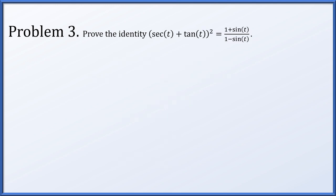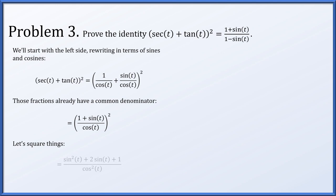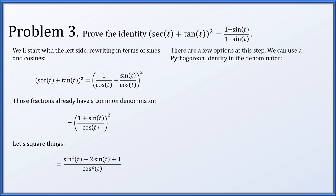In problem 3 we'll prove the identity that (secant t plus tangent t) all squared is always equal to (1 plus sin t) over (1 minus sin t). We'll start with the left and make it look like the right hand side. The left seems more complicated because it has secants, tangents, and squaring. We rewrite in terms of sines and cosines: (1 over cos t plus sin t over cos t) all squared. They already share a common denominator, so we combine to get (1 plus sin t) all over cos t, squared. Squaring gives us numerator sine squared t plus 2 sine t plus 1, and denominator cos squared t.